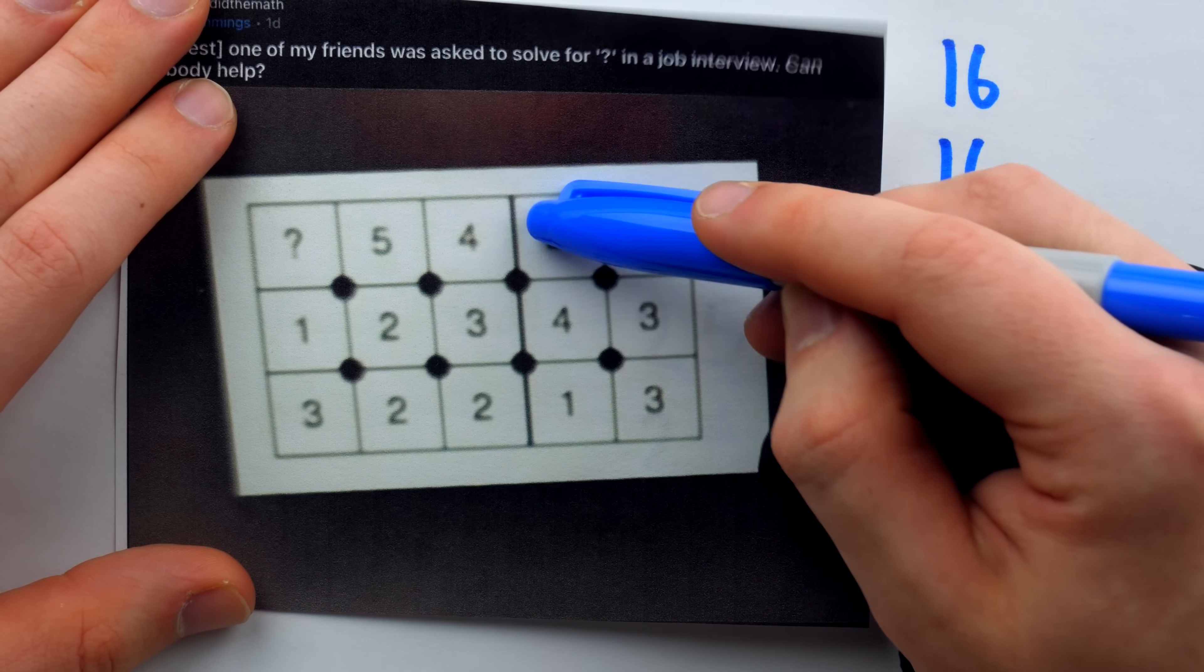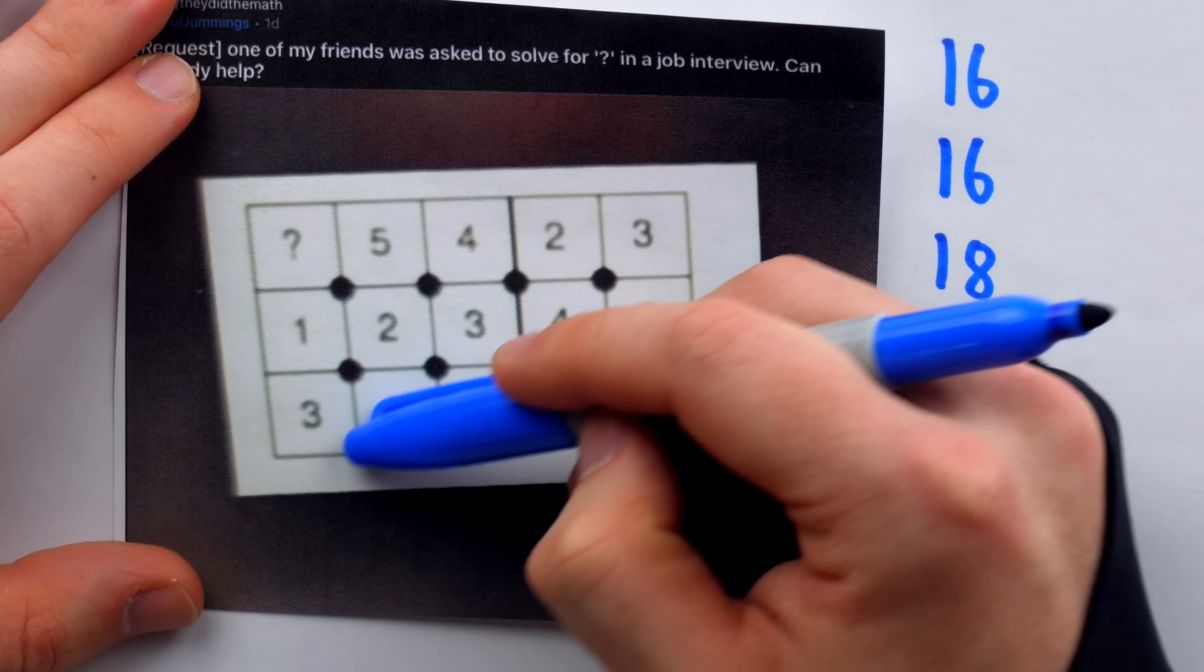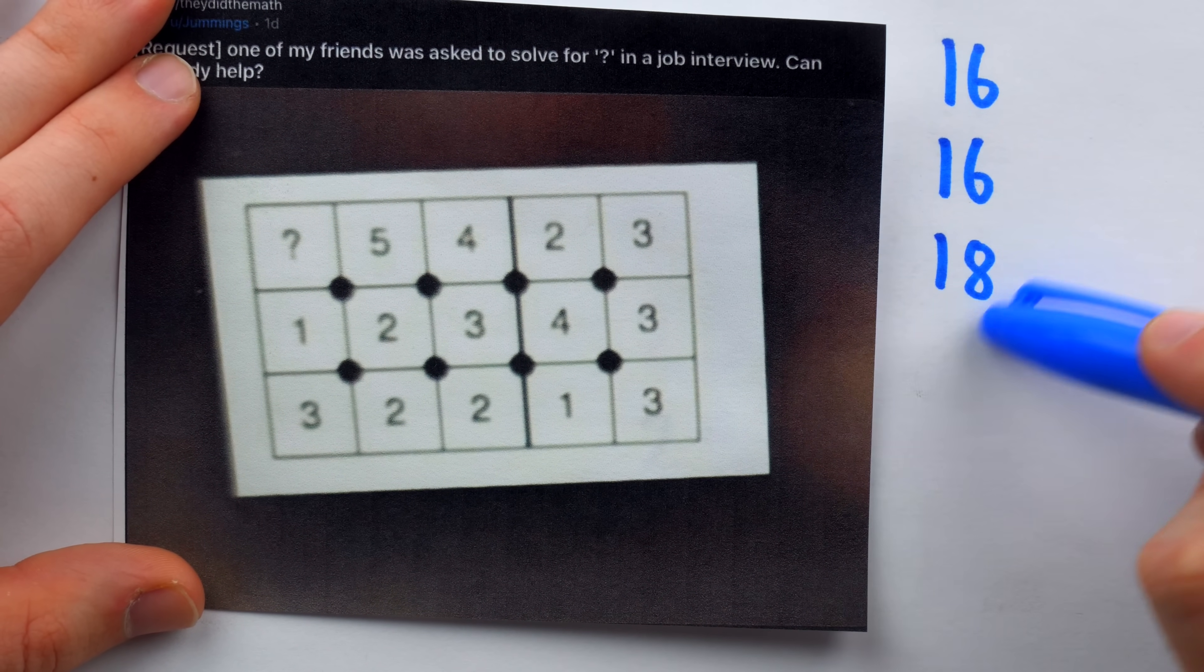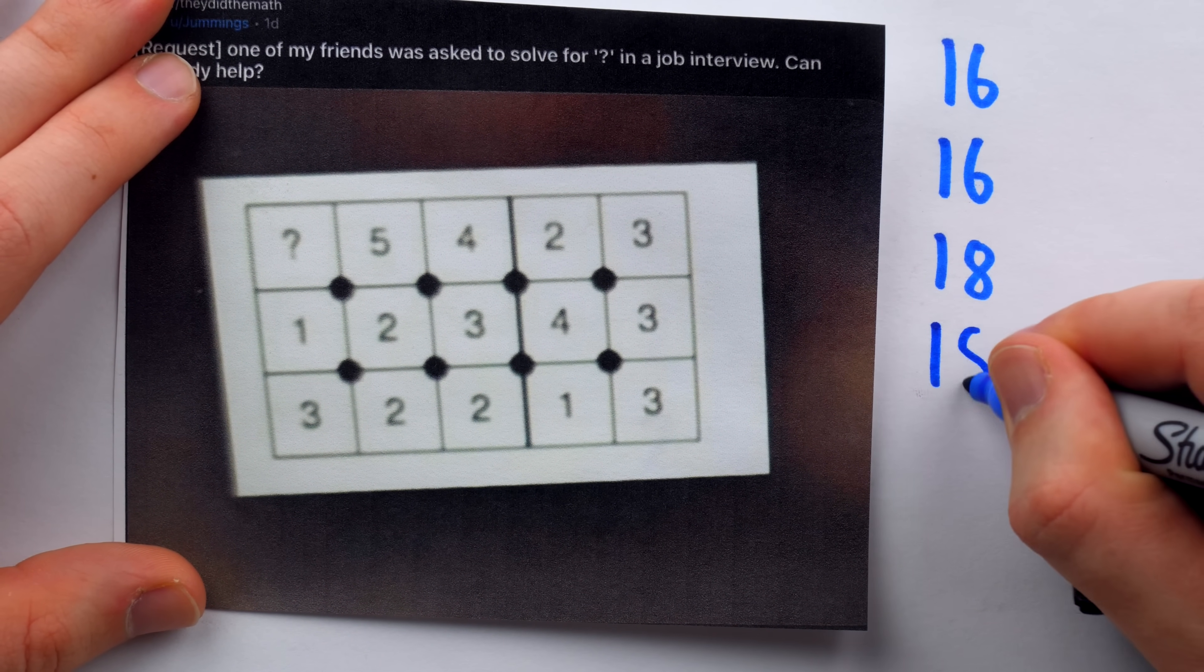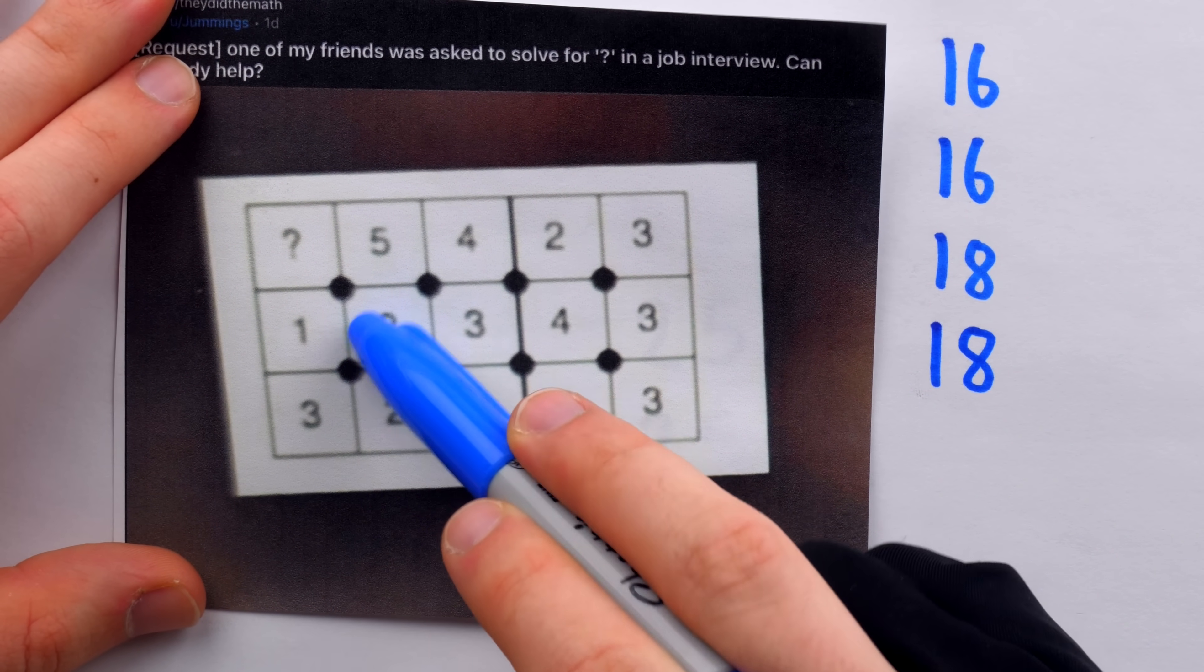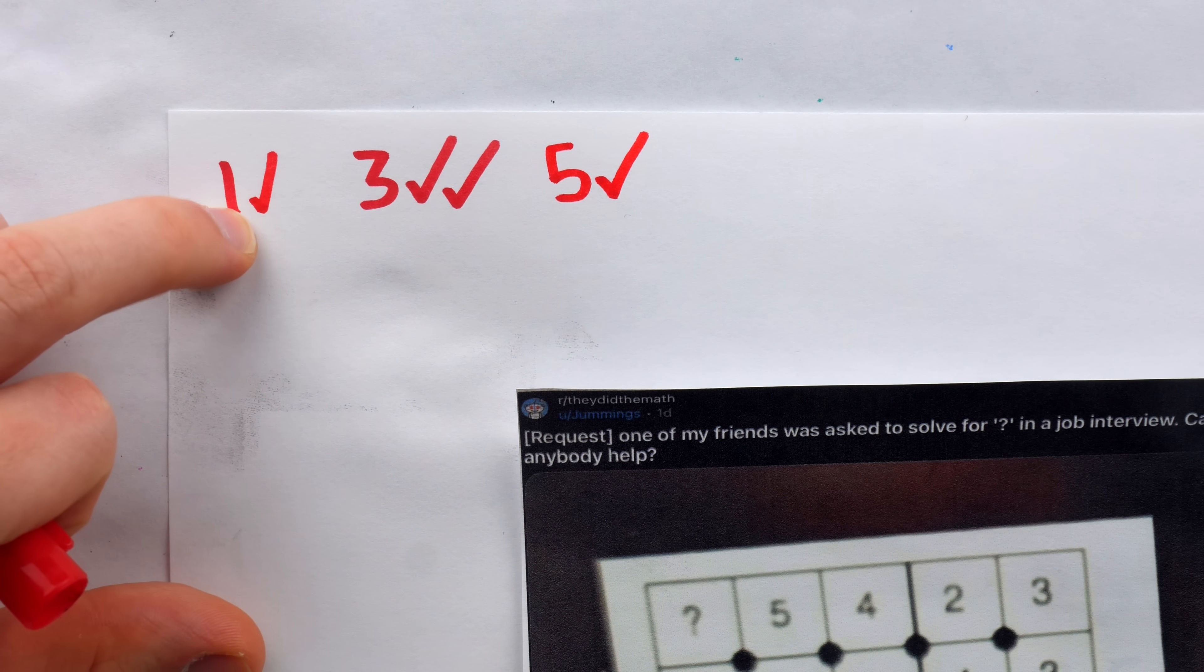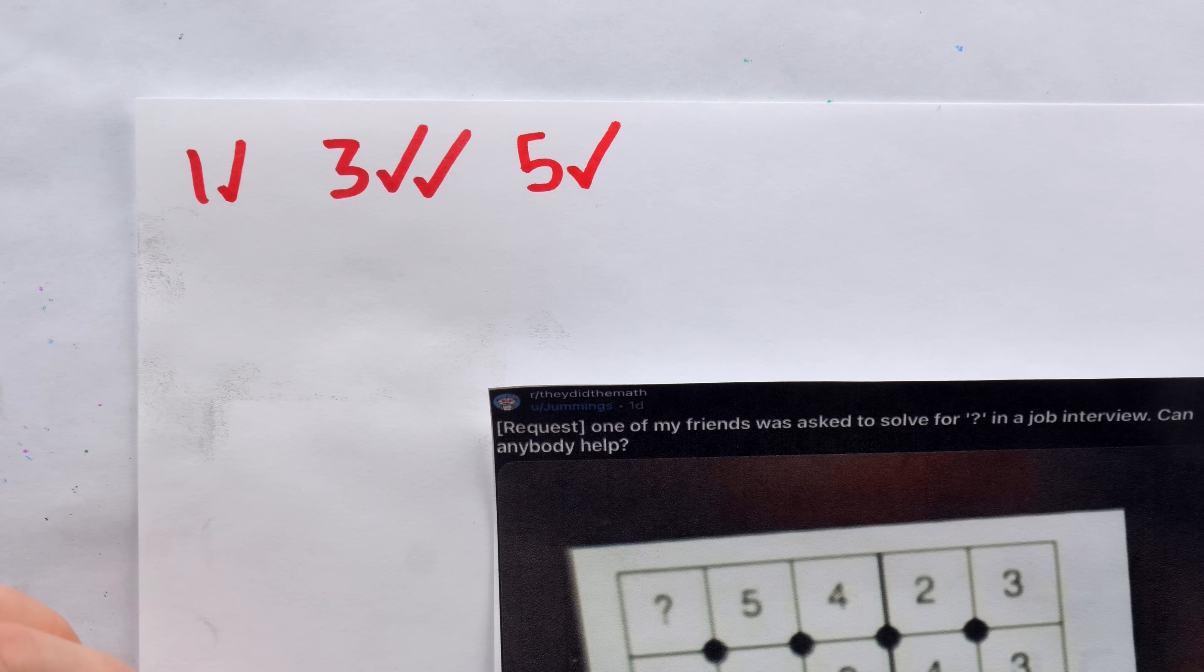Since both of the 2 by 3 rectangles on the right added to 16, we may suspect that the two 2 by 3 rectangles on the left should add to 18, since the first one does. So if this 2 by 3 rectangle is to also add to 18, then the question mark needs to be equal to 5. That would bring the total to 18. 5 plus 5 is 10, plus 3 is 13, plus 5 is 18. So now we also have one possible explanation for 5 being the correct answer.